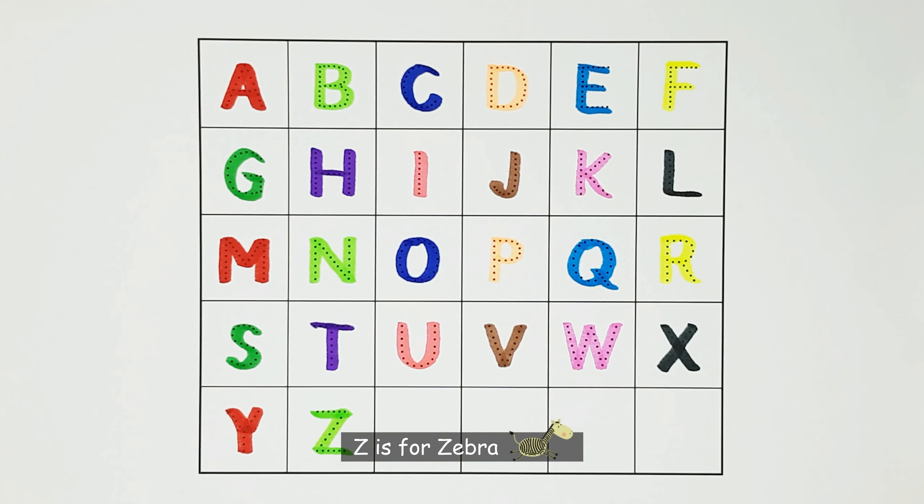P. P is for parrot. P. Q. Q is for quokka. Q.